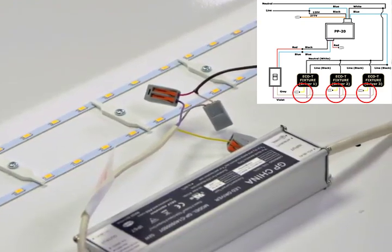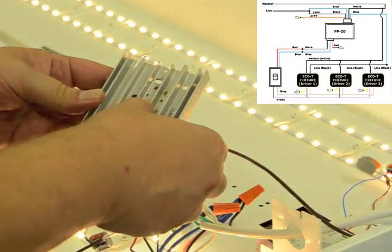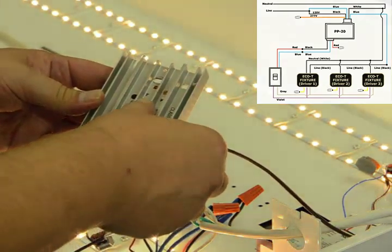This can be done to a total of 20 fixtures. Now you have synchronized full dimming of up to 20 Eco-T lay-in troffers on a single wall dimmer switch.